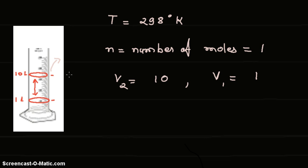The formula for work done is W equals minus n R T ln(V final / V initial), where n is the number of moles, R is the gas constant, T is temperature in Kelvin, and ln is the natural logarithm of final volume divided by initial volume.